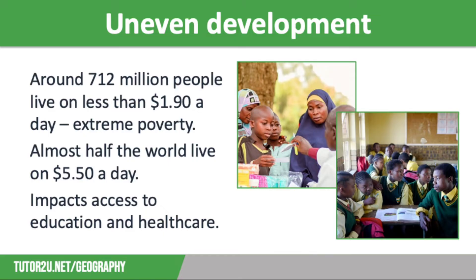Uneven development means that there are differences in access to services that are vital for a good quality of life, such as education and healthcare. The level of poverty in many LICs and NEEs means that industrial development is limited, and therefore many people end up working in the informal sector where they don't pay tax. As a result, there is less money for the government to spend funding important services.